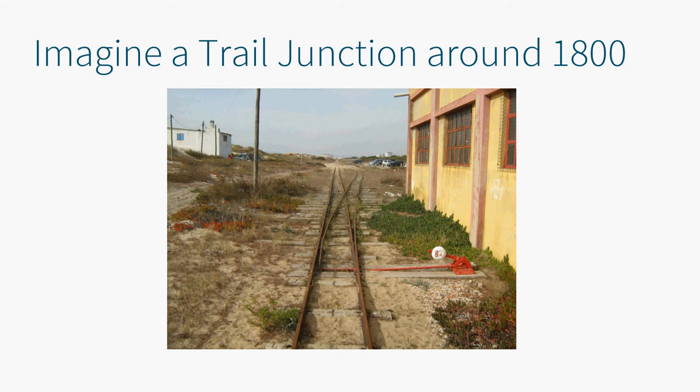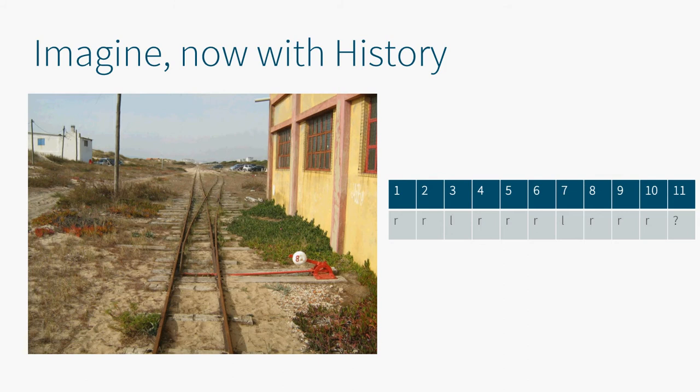You wonder if there's a faster way. So you decide to keep track of where past trains were going, and based on this you can make a prediction. For example, you might see a pattern and predict that the next train will most likely go to the left. So you put the junction to the left, and if you are right, the train without stopping can just go on its way. If you guessed wrong, the train already drove in the wrong direction, has to stop, drive a little backwards, tell you the error, and you have to fix it.